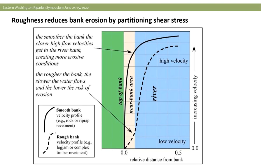That roughness is also creating a lot of low-velocity habitat — not just for fish, but for fine sediment to deposit, which can be the foundation for getting plants established along the toe of the banks. So even if you're building a rock revetment, the rougher we can make these features, the better off we'll be — both for the integrity of the structure and ecologically.